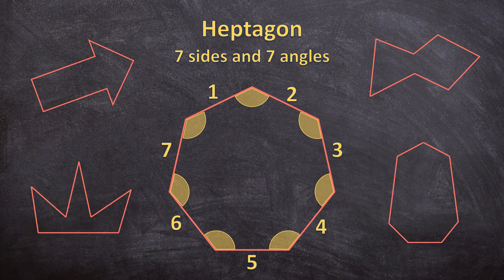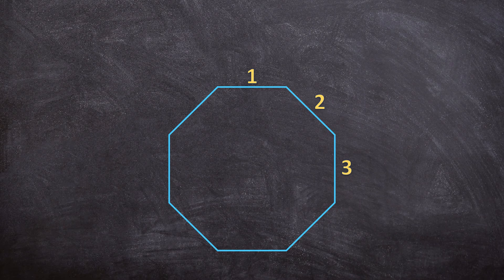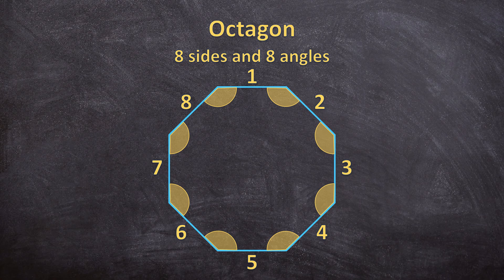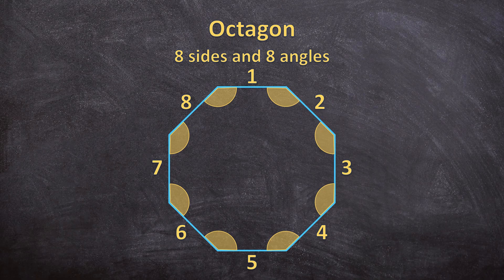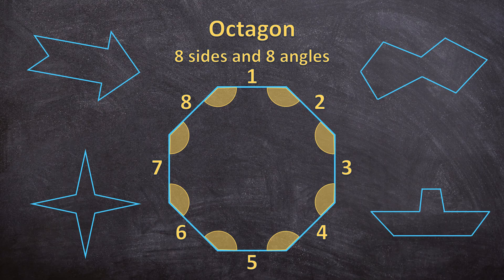And now for the next shape. This polygon has 8 sides and it also has 8 angles. So this is called an octagon. And here are a few more examples of octagons. They all have 8 sides and 8 angles.